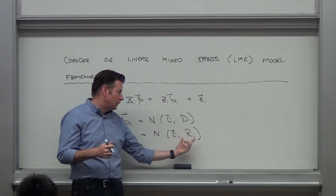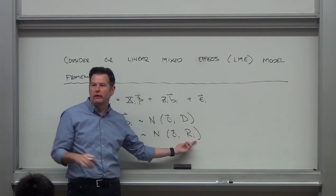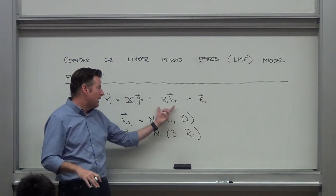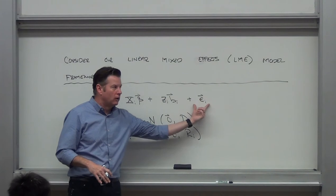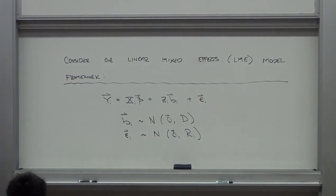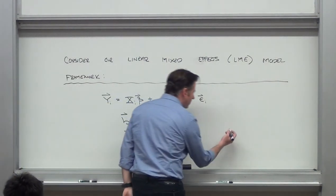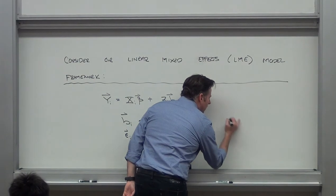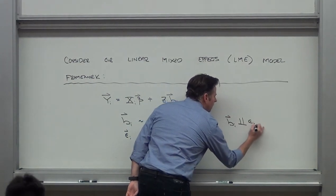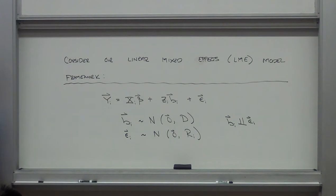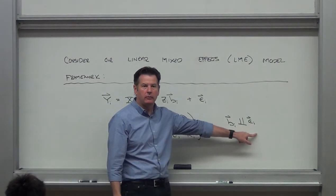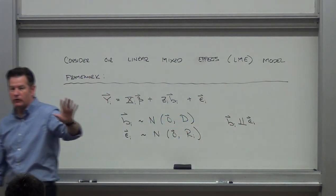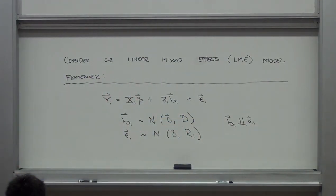Another possibility is to put some autoregressive structure on R-I if thinking about time or space, accounting for correlation in measurements that are closer to one another. To make things tractable, we assume the random effects B-I are independent of epsilon-I, which gives us additivity in the variance.